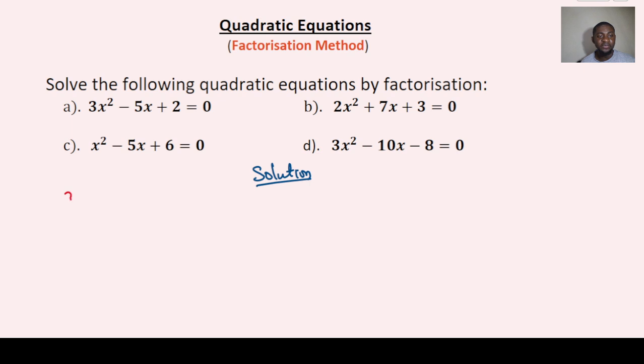The very first one we have 3x² - 5x + 2 = 0. What you need to do is put x in a bracket, x leave a space, then close it. Another thing, x in a bracket, leave a space, close it, equals to 0.